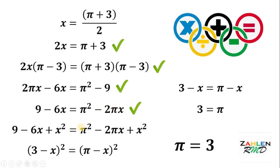On the next line, we add x squared on both sides. Since we add the same value on both sides, this line is correct. We then factor both sides, and that's correct as well.